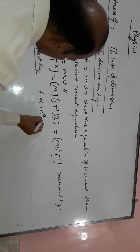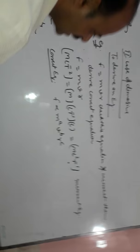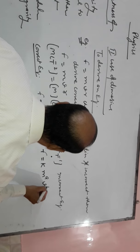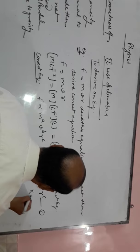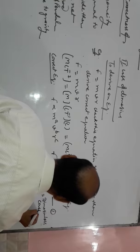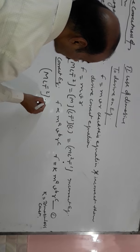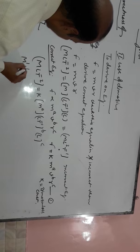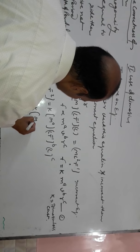F directly proportional to M to the power A, V to the power B, R to the power C. This is equation number 1, where K is a dimensionless constant. MLT⁻² equals K times M^A times (LT⁻¹)^B times L^C, which equals K M^A L^(B+C) T^(-B).